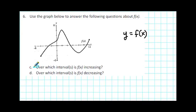So instead of reading for c, over which intervals is f of x increasing, we could be reading it over which intervals are the y values increasing. And for part d, we could be thinking over what intervals are the y values decreasing.